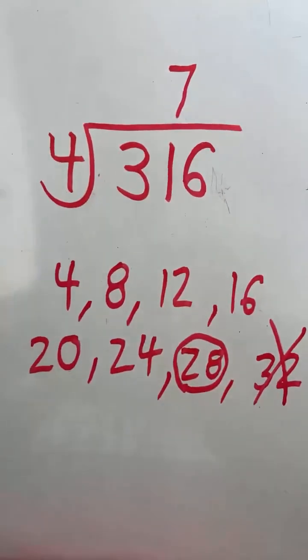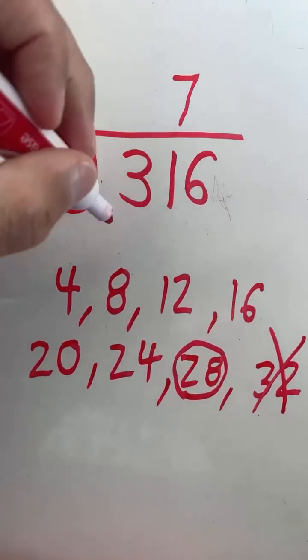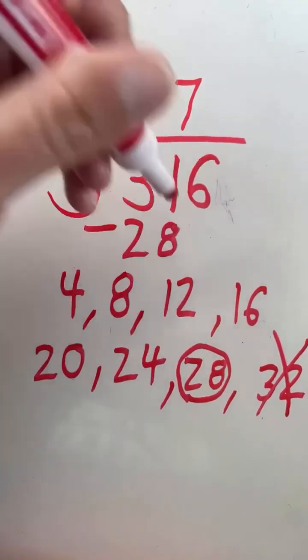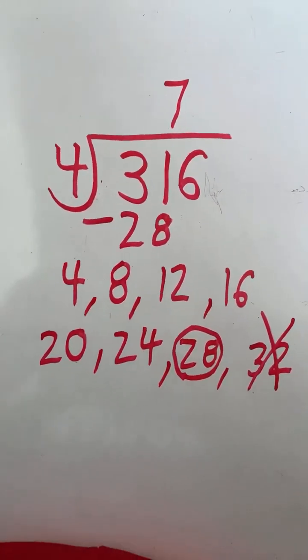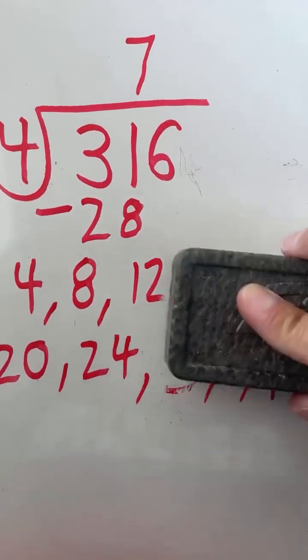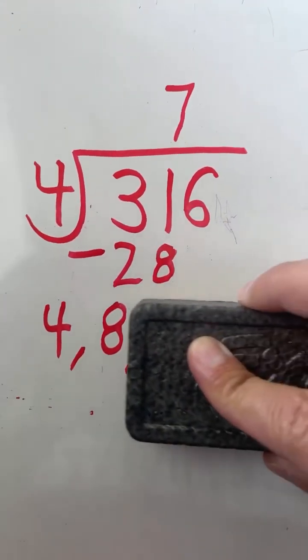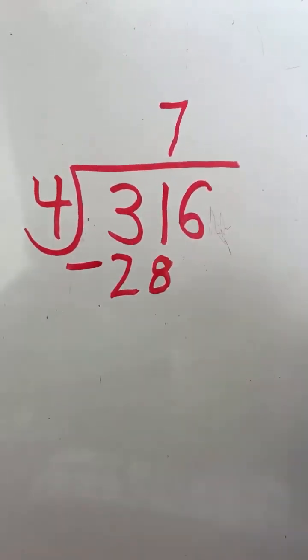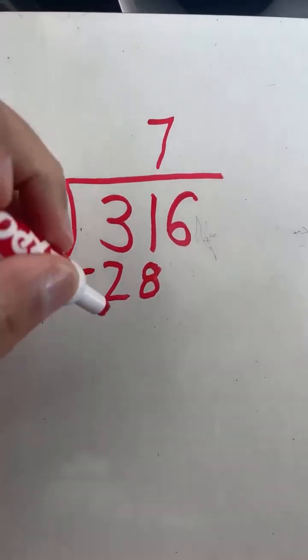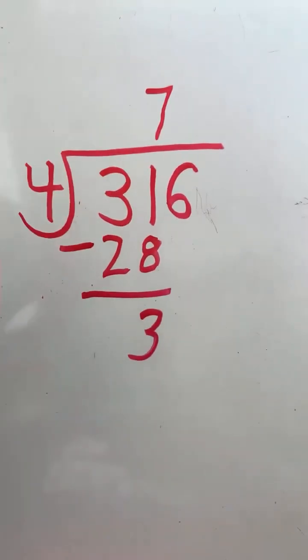The closest we could get to 31 without passing 31 was 28. So 28 is the number that we have to subtract to find our remainder. The next step is I'm going to do 31 minus 28 to figure out what our remainder is. 31 minus 28 equals 3, so we have a remainder of 3.